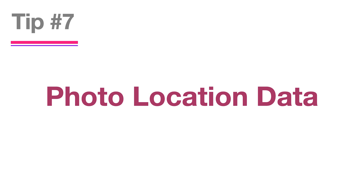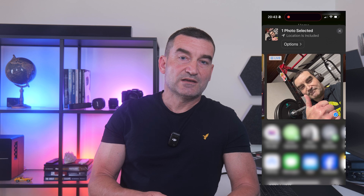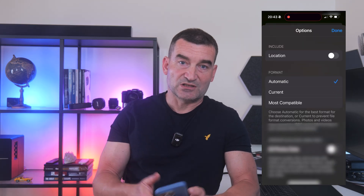Tip number seven: photo location data. You take a cute backyard selfie, post it online, and now the metadata says exactly where you live. Toggling off location when you share a photo is a small step that can protect your privacy in a big way. When sharing, tap Options at the top of the share sheet and toggle off Location.